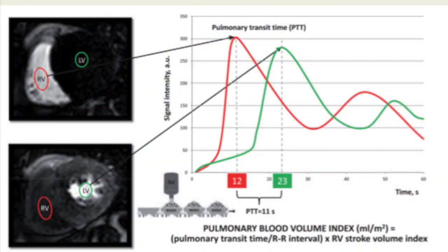Two regions of interest are drawn, one in the RV and one in the LV cavity. Signal intensity by time curves are plotted. Pulmonary transit time is defined by the time interval between the peaks of the two signal intensity by time curves for RV and LV respectively. The pulmonary blood volume index can be obtained by the product between the pulmonary transit time and the RV stroke volume index normalized by the RR interval. This method has been well described in a recent publication in the European Heart Journal and subscribers are encouraged to read through this part.